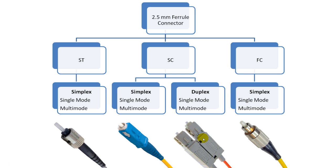SC connectors have a push-pull coupling mechanism and also have a 2.5 mm ferrule. SC connectors are available in simplex, which has one single fiber, and duplex. Both simplex and duplex SC connectors are available in single-mode and multi-mode fibers.